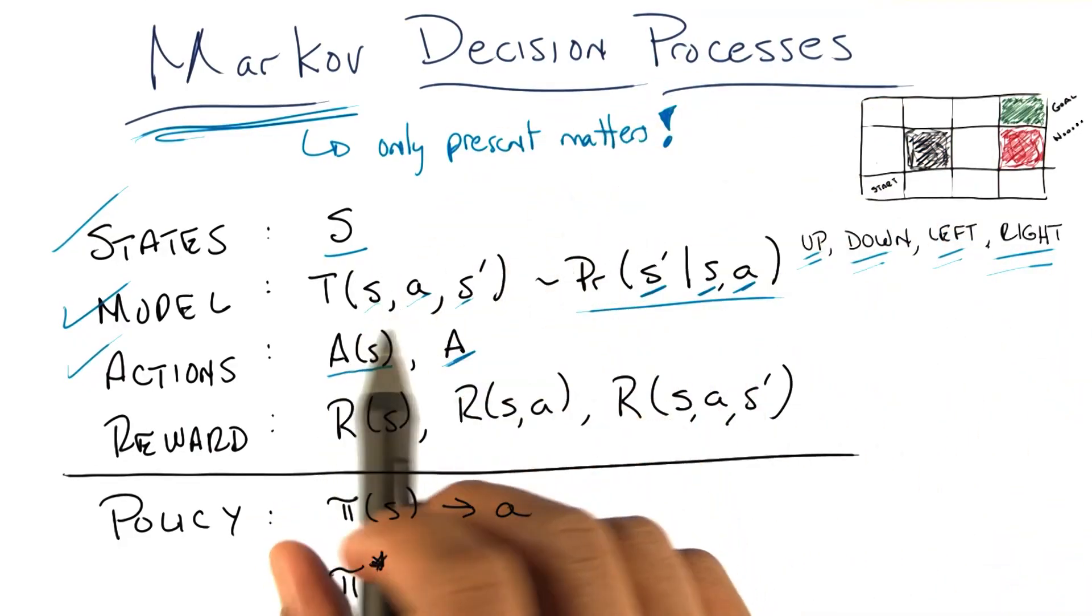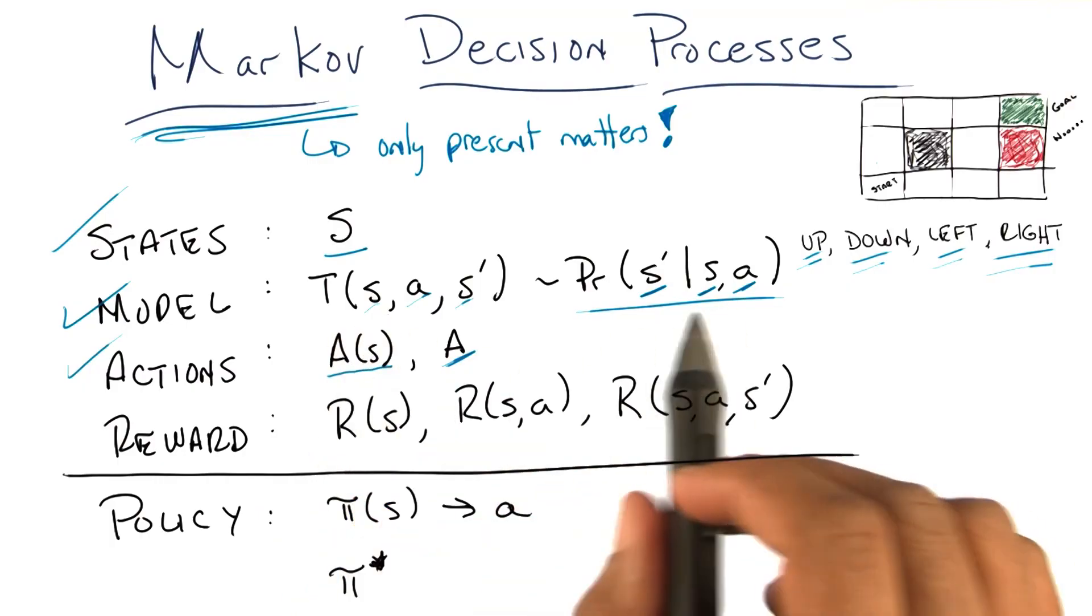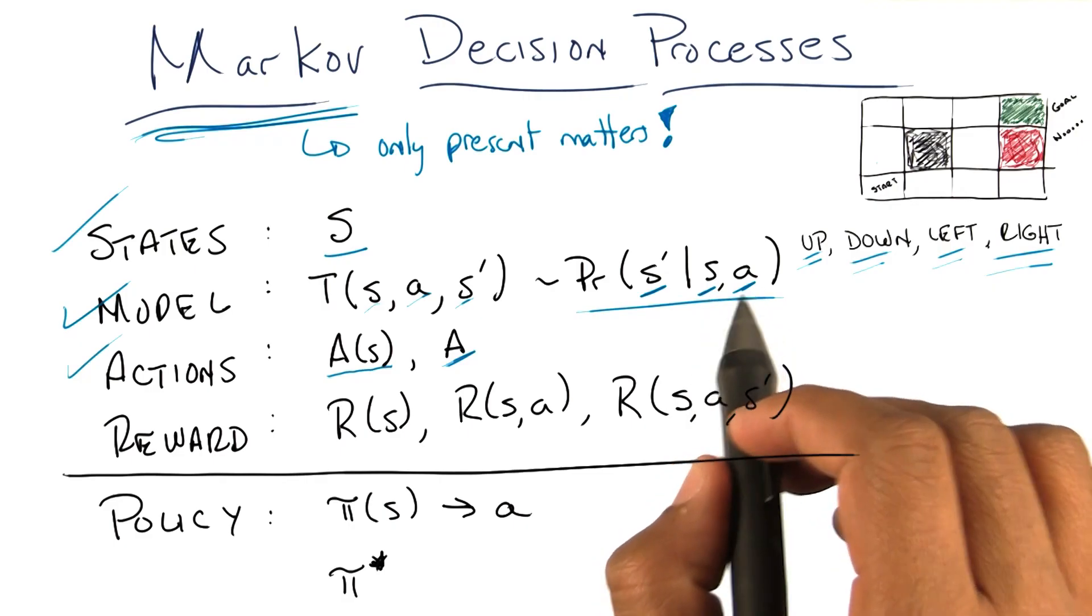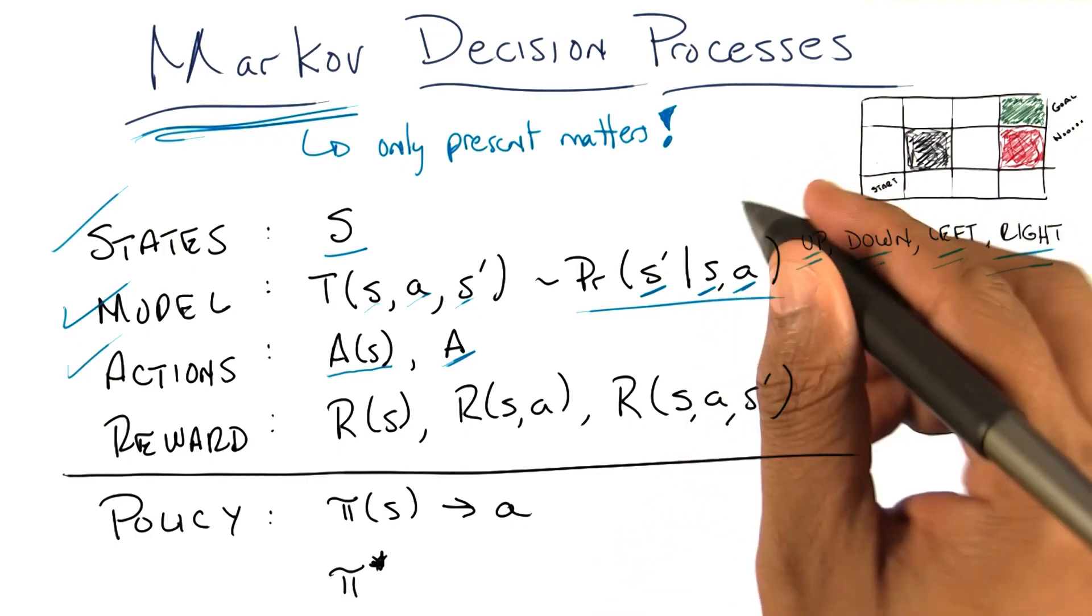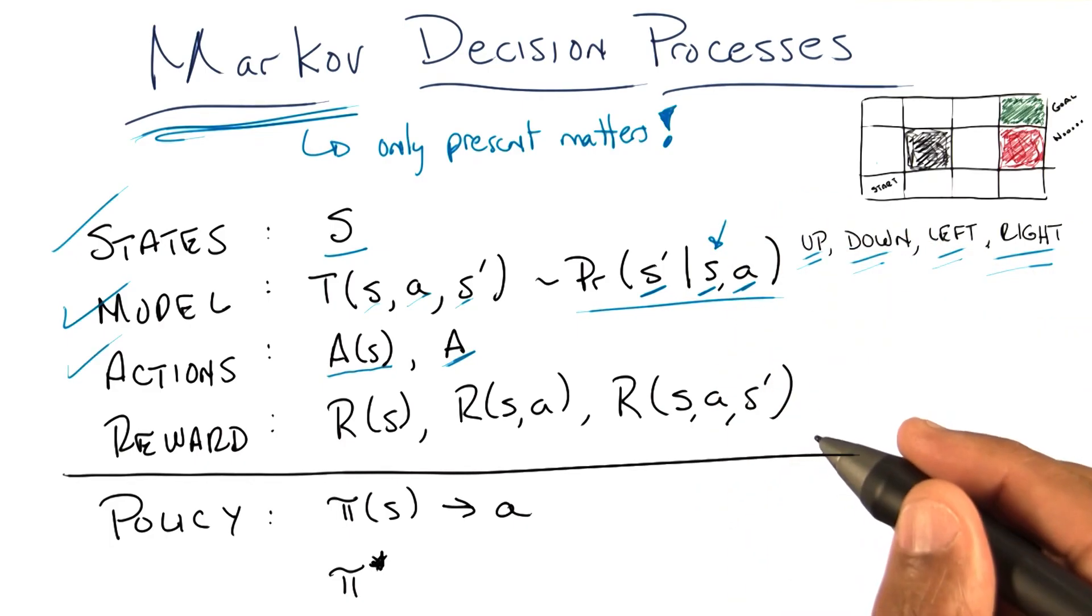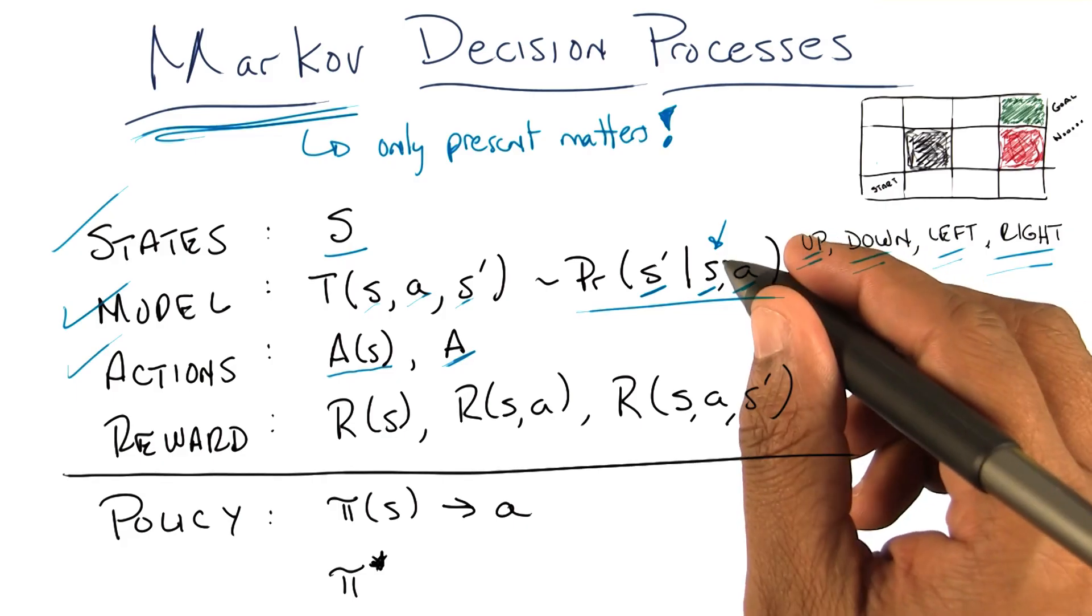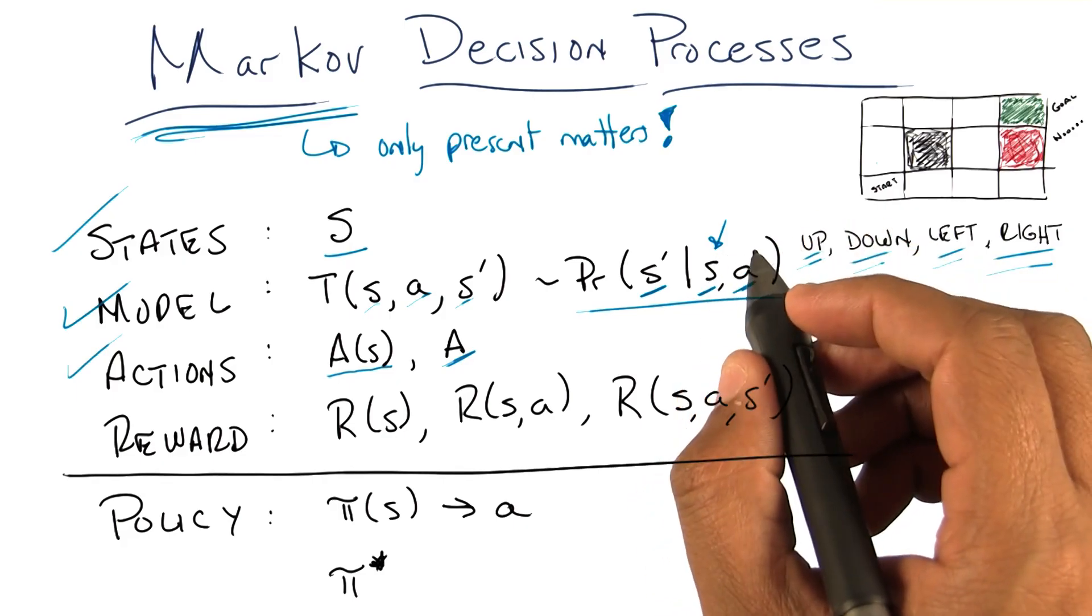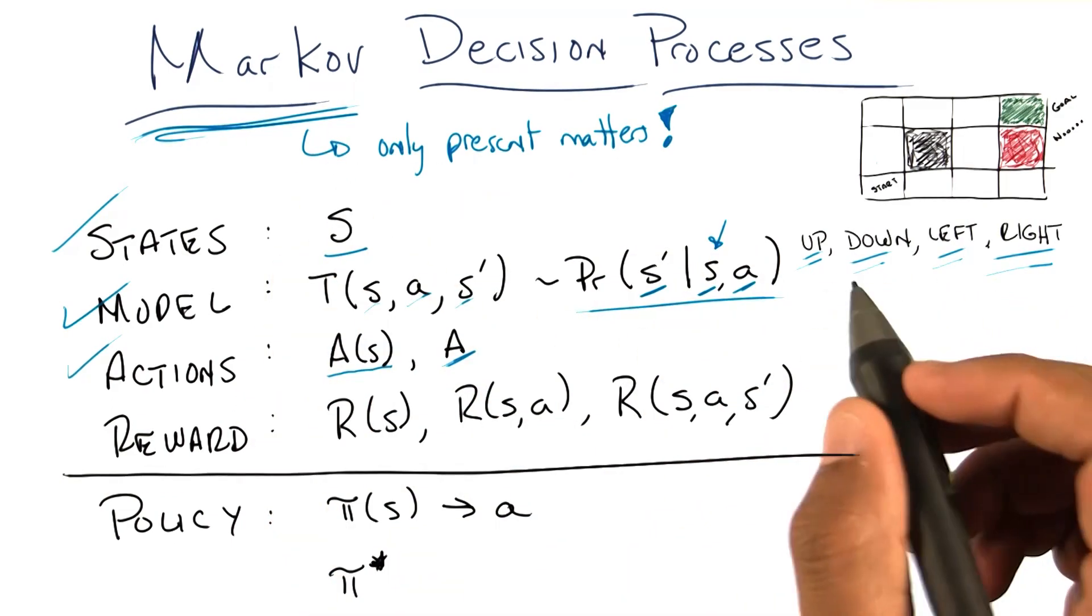So what does this mean? What this means is our transition function, which tells you the probability that you end up in some state S prime, given that you were in state S and took action A, only depends upon the current state S. If it also depended upon where you were 20 minutes before then, you would have to have more S's here, and then you would be violating the Markovian property.